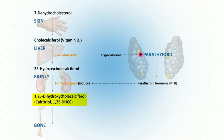Calcitriol is the physiologically active form of vitamin D. So what does all this do? Vitamin D increases calcium uptake in the intestine by increasing the expression of calcium-binding protein. It also works in the intestine to increase absorption of phosphate and magnesium. It stimulates parathyroid hormone-dependent reabsorption of calcium in the distal tubules of the kidney. And it stimulates bone reabsorption when necessary, along with PTH. All three of these things are going to increase serum calcium.